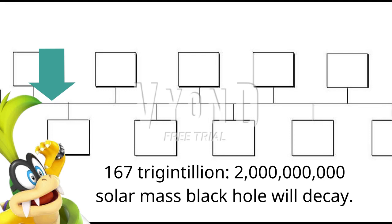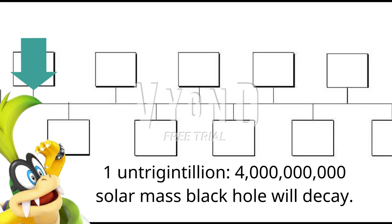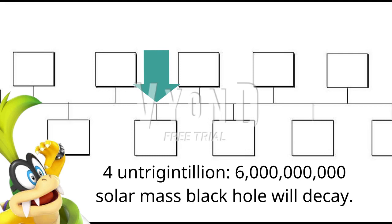167 Trigentillion: a 2 billion solar mass black hole will decay. 566 Trigentillion: a 3 billion solar mass black hole will decay. 1 Untrigentillion: a 4 billion solar mass black hole will decay. 2 Untrigentillion: a 5 billion solar mass black hole will decay.